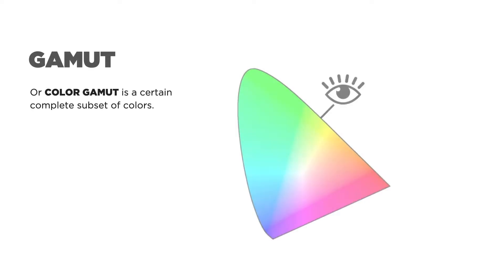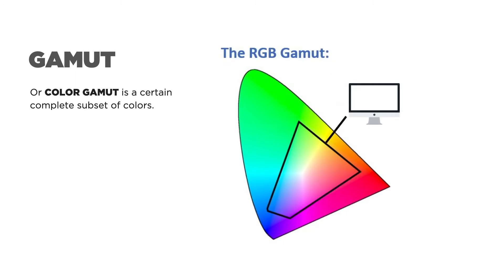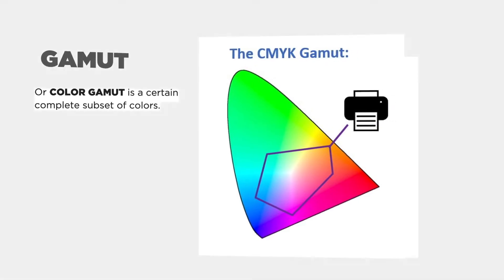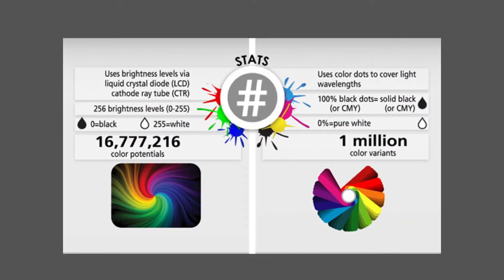CMYK has a lower color gamut than RGB. Gamut, or color gamut, is the range of colors available to a certain color model. For example, if this selection represents the colors available to the human eye, only a portion of that can be represented by the computer monitor, and an even smaller amount can be printed. RGB is capable of over 16 million color potentials, with just a million available to CMYK.